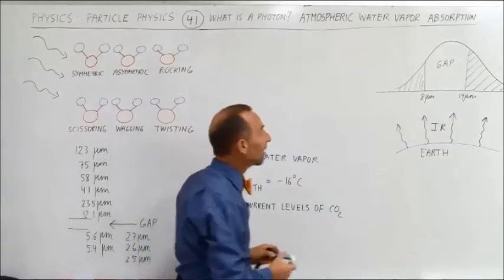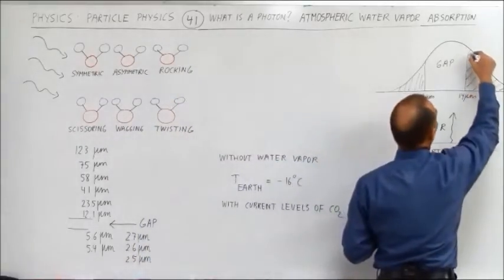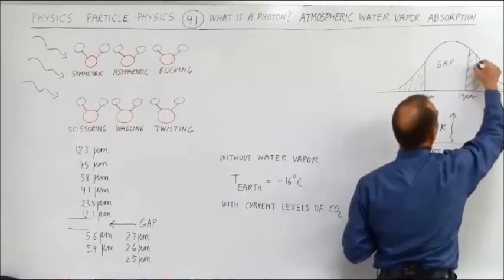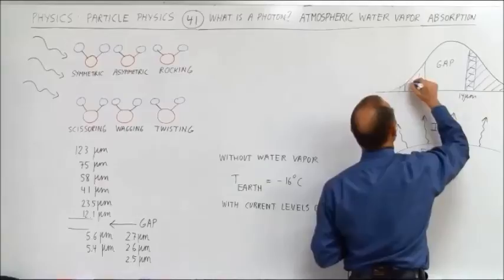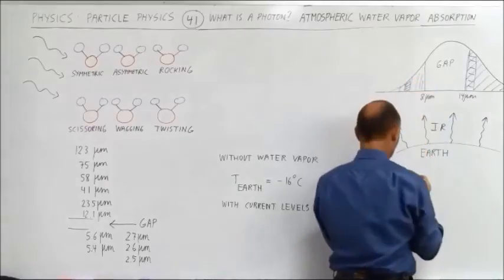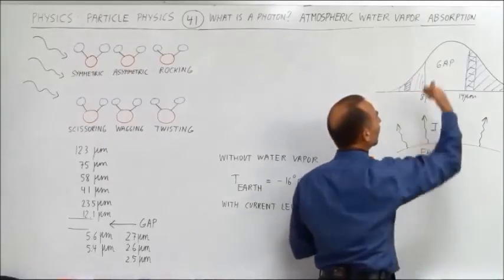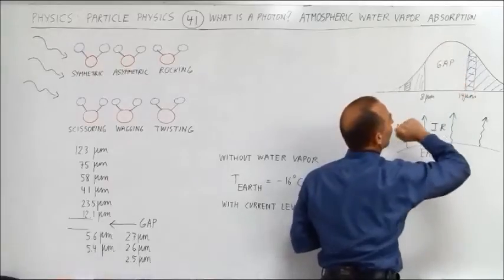Carbon dioxide does have an effect. Carbon dioxide has a band like right in here where it blocks out all the energy going back into space and it has another region right here where the carbon dioxide molecule keeps things from going back into space, keeps energy from getting back into space.